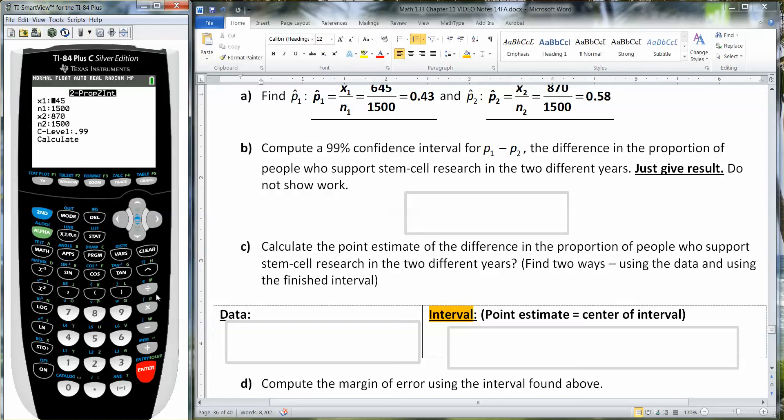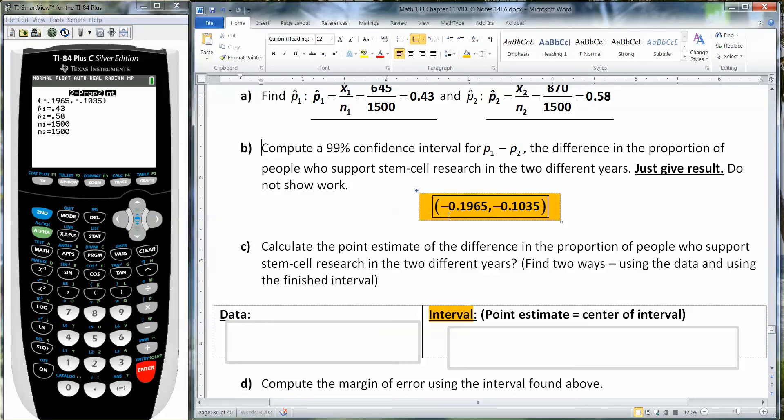There we go. And then I'm going to type 645, 1500, 870, 1500, and then 99.99 is my confidence level. I'm going to go down to calculate and press enter. And there I can see the values of negative 0.1965 to negative 0.1035.